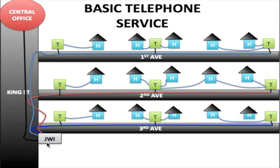Now this cable would go to a JWI — JWI stands for Junction Wired Interface. It's also commonly called a cross box, but JWI is more of a formal name. So now your cable is terminated within this box. If you have 100 pairs in your cable, all 100 pairs are terminated here. There are other cables terminated within this JWI, and these cables go to your customers' locations. This cable is going to 1st Avenue and has 30 pairs in it — 10 pairs connected to one terminal, another 10 to the next, and another 10 to the next. These terminals are how the homes are connected, and all of these streets will be connected in the same way with cables coming from the JWI.